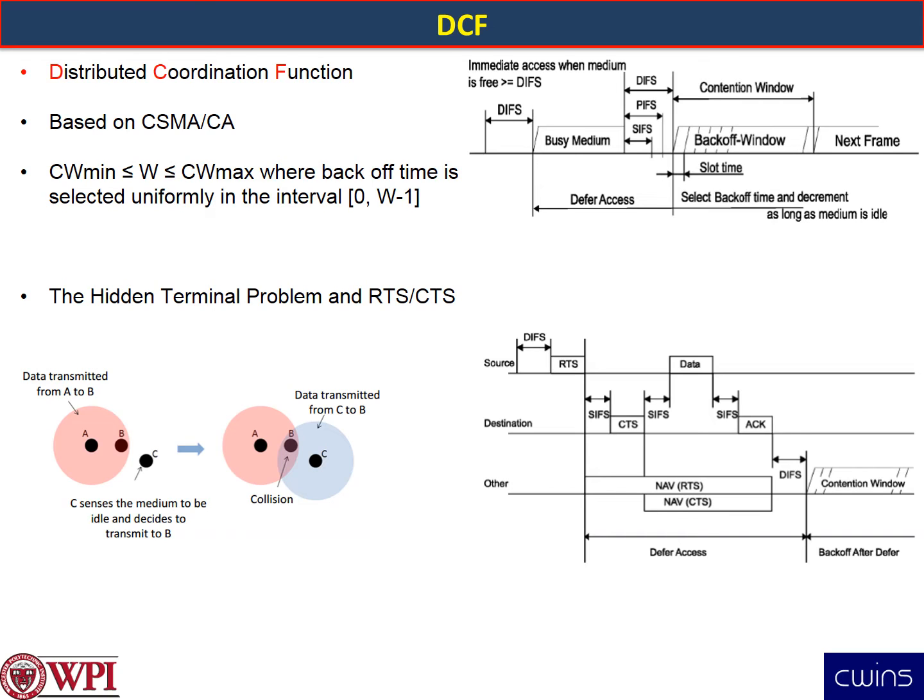This window length is uniformly distributed in the interval of 0 to W minus 1. The constant W is originally set to CW_min and then doubled after each unsuccessful transmission until it reaches the maximum window size CW_max. The contention window size CW is reset to CW_min and the backoff procedure is performed after each successful transmission. This is a summary of how the Distributed Coordination Function works.